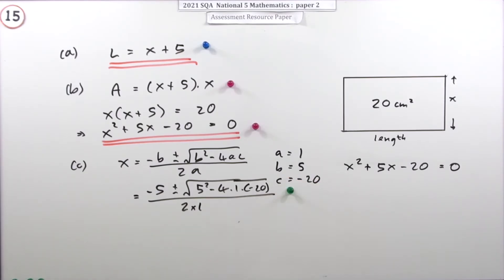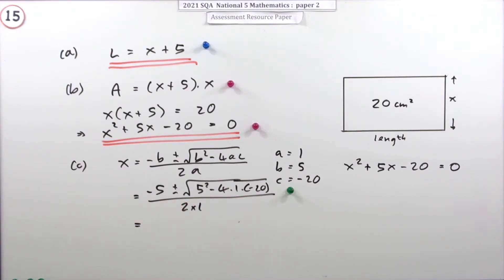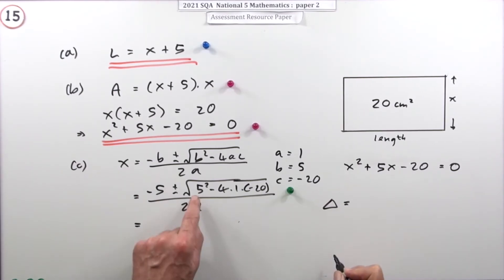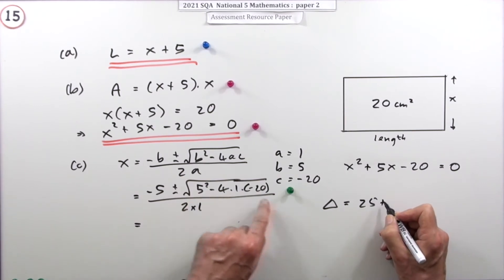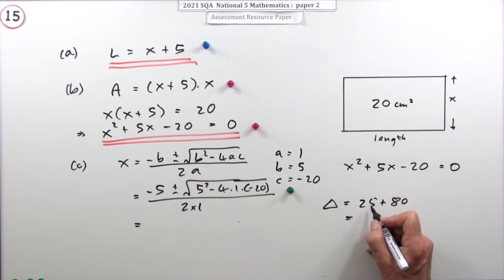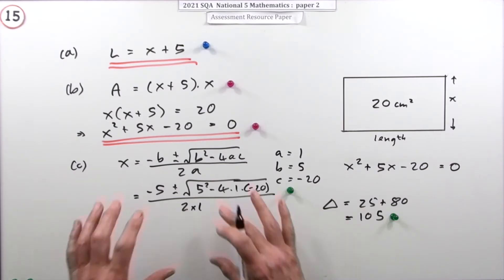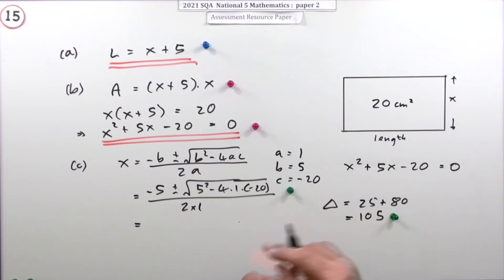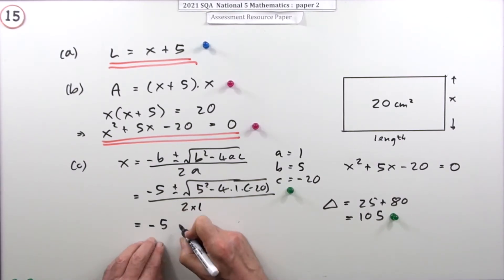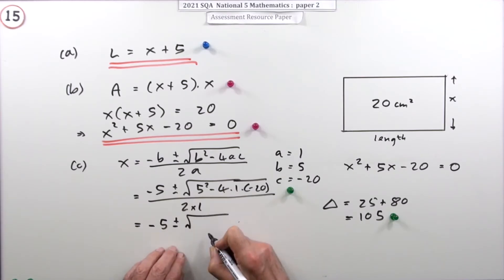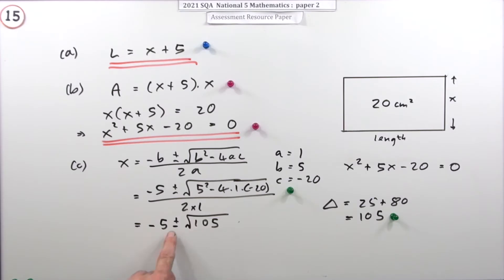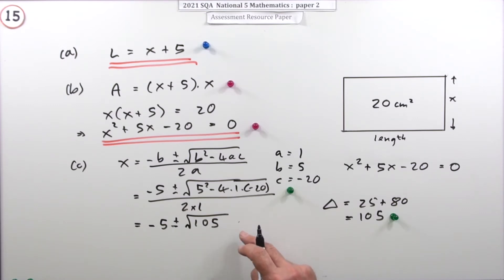Writing that down gets the first mark. It's best to work out the discriminant separately to keep things neat. You've got 25 take away a negative, which is plus 80, so the value under the square root is 105. Working that out gets a mark. So the expression becomes negative 5 plus or minus the square root of 105. The marking scheme shows both answers for that mark.